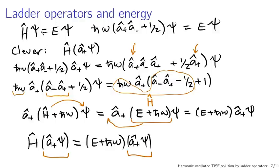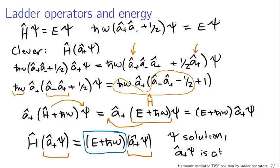This looks just like the Schrödinger equation for a wave function given by â₊ψ. So if ψ is a solution to the time-independent Schrödinger equation with energy E, then â₊ψ is also a solution with energy E + ℏω. That's really the clever part. This gives us machinery for constructing solutions from other existing solutions, though we haven't actually solved the system yet — there's a little bit of cleverness left.